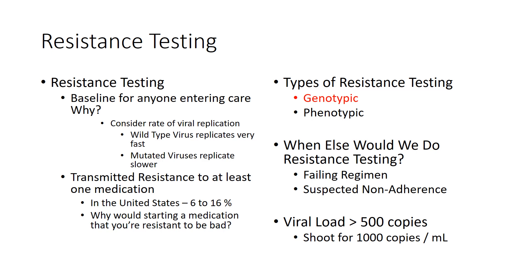One of the big lab tests we need is a resistance test. We do these for everyone entering care because we must consider that a number of patients have had a mutation or resistance transmitted to them by their partners. It's best to find these mutations quickly, because if somebody stops taking medications, resistance mutations can actually disappear from detection — since wild-type virus replicates much faster than mutated virus under drug pressure. Transmitted resistance is possible in at least 6 to 16% of people in the United States, and starting a medication a person is already resistant to would be ineffective and could increase resistance to the other medications.